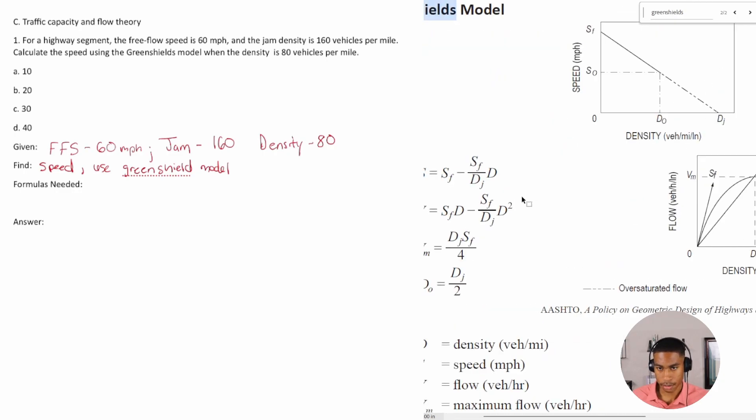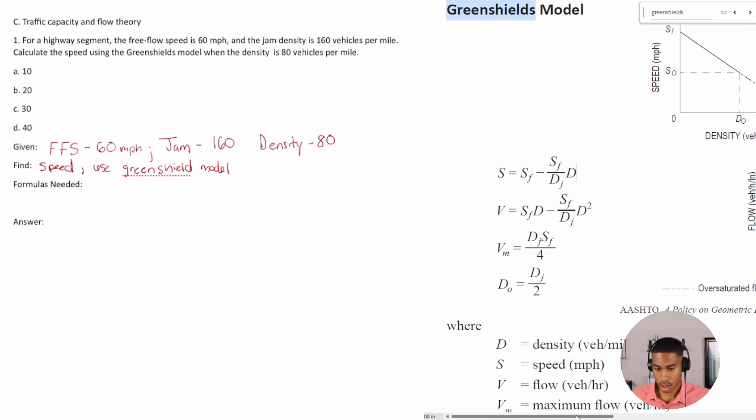So the formulas that I see that we can use is this top formula: S equals, and I'll zoom in so you all can see a little bit better. Okay, so S equals S_f minus S_f over D_j times D.